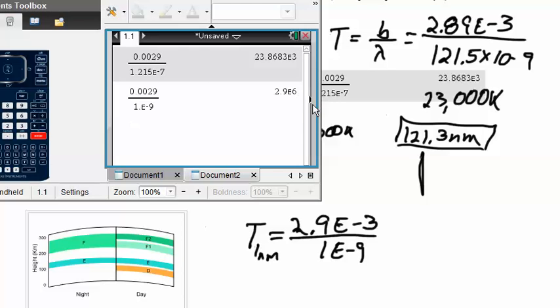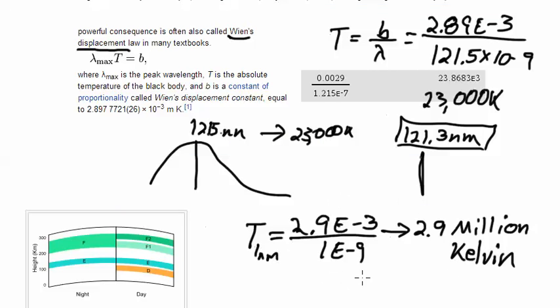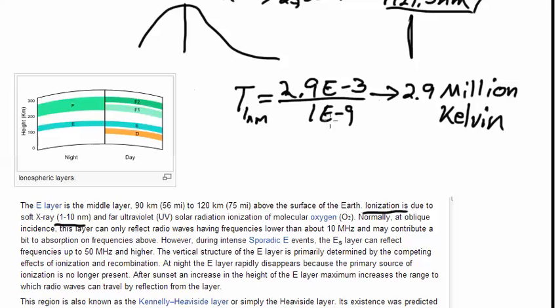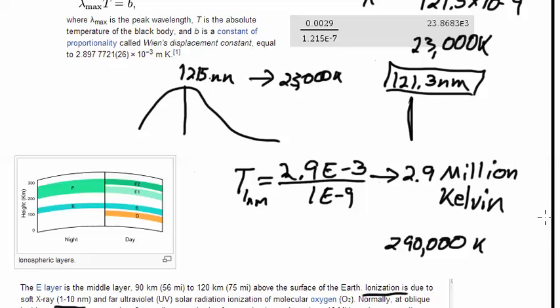But it might be that 122 nanometer light might be absorbed by something else that can catch it in some other wavelength. But I think that's a large part of what's going on in this region is that whatever light is coming in from the sun is being captured by that D series. This D layer of the ionosphere. Let's go ahead and look at the E layer here. The E layer ionization is due to soft x-ray, 1 to 10 nanometers. Now compare that to the 121.3. Let's see, let's look at what the temperatures would be with 1 to 10. So for 1 nanometer, the temperature is 2.9 times 10 to the negative third, divided by 1 times 10 to the negative ninth. Which matches a Wien's law temperature of 2.9 million Kelvin.